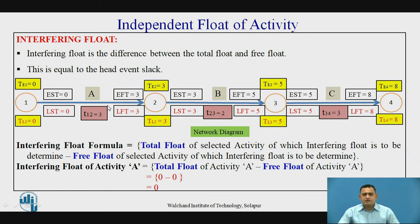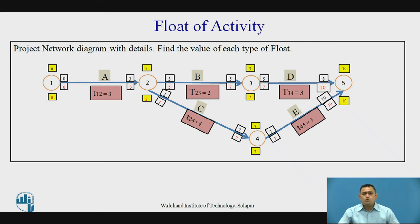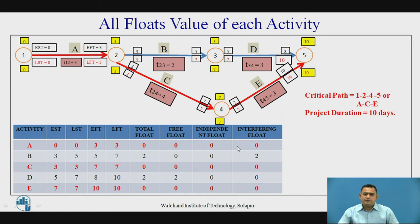Now let's clarify with a full example. This example has 5 activities. The network diagram shows the event times as well as activity times, and the overall project duration is 10. We can identify critical and non-critical activities using the floats. The table shows all activities with their total floats, free floats, independent floats, and interfering floats.